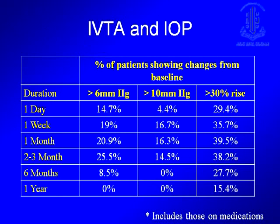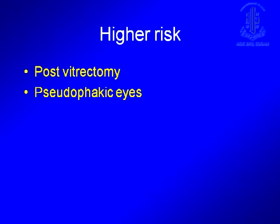The peak rise occurs between 1 to 3 months, and after that, those who have an elevated IOP — I'm talking about a greater than 10 mmHg increase — continue to have an elevated IOP. Even patients who don't have such a dramatic increase still show more than a 30% increase in IOP from their baseline with time. There is also a high risk of the response in post-vitrectomy and pseudophakic eyes.